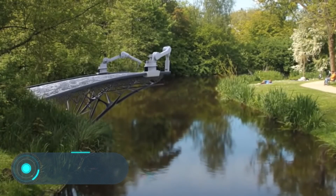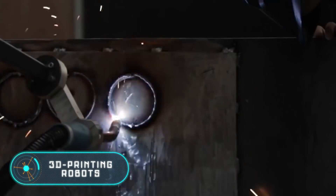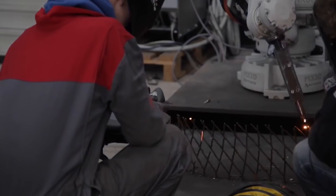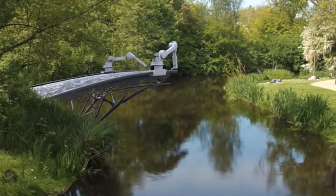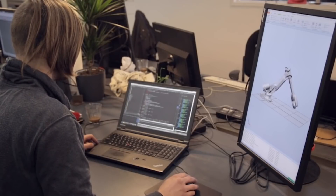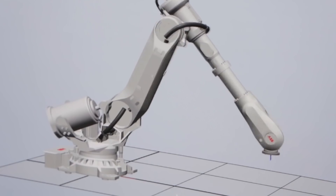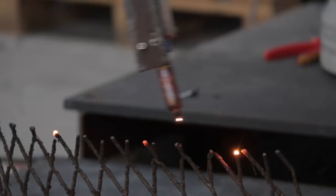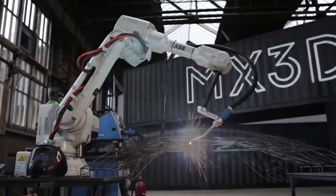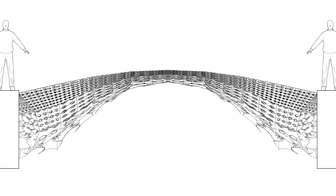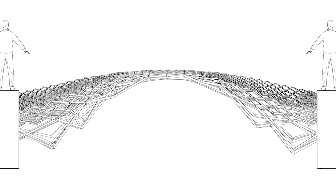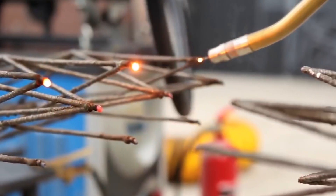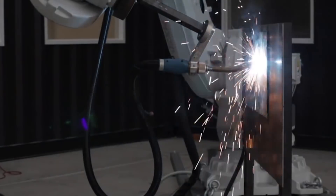3D Printed Bridge. In October 2015, the company MX3D launched an innovative project for the construction of a bridge using 3D technologies in Amsterdam. The protagonist of the project is an industrial robot, typically used on assembly lines in the automotive industry. However, this model was equipped with a welding machine and special software. The finished steel bridge is 12 meters long and designed exclusively for pedestrians. The creators say this design is just the first step in creating more complex 3D construction projects.